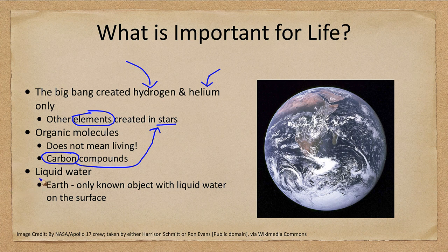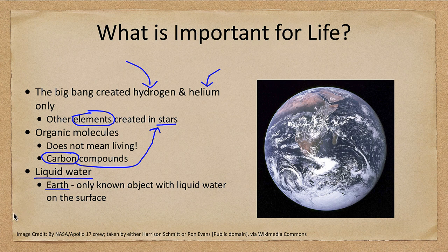We also tend to think we need liquid water, and there's only one object that we know of currently with liquid water on its surface, and that is our Earth. Other objects may have had liquid water in the past — and likely did, such as Mars — but others have never had liquid water on their surface.